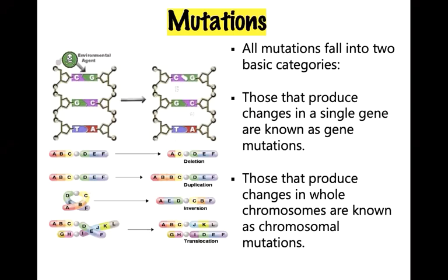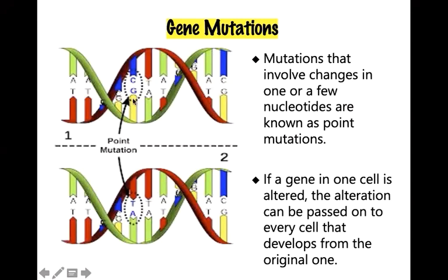In the graphics, you can see the changes that occur: deletion, duplication, inversion, and translocation. Point mutations occur at a single point in the DNA sequence. DNA is the heritable nucleic acid. Point mutations generally occur during replication.